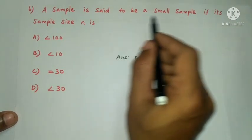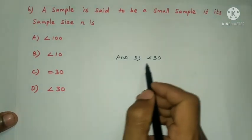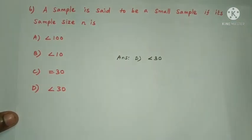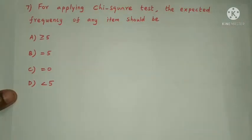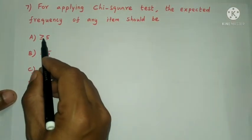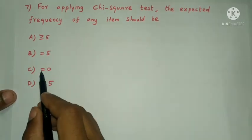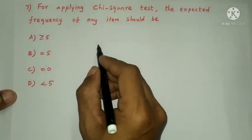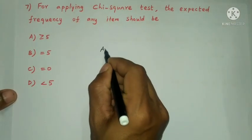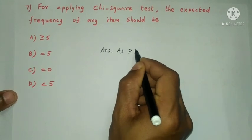For chi-square test, the frequency of any item should be — greater than or equal to 5, equal to 5, equal to 0, or less than 5. The answer is option A: greater than or equal to 5.